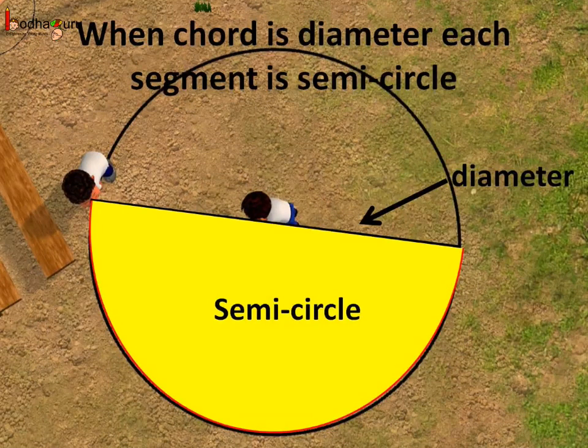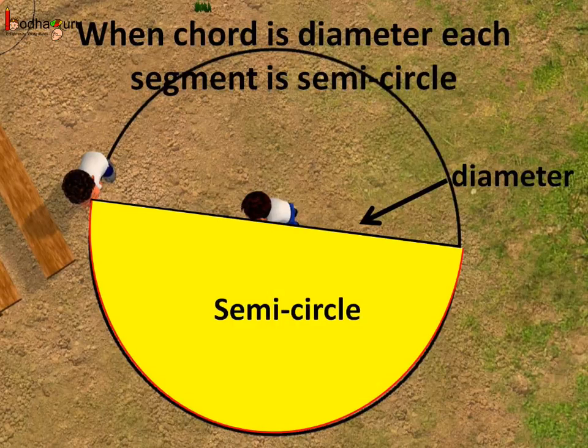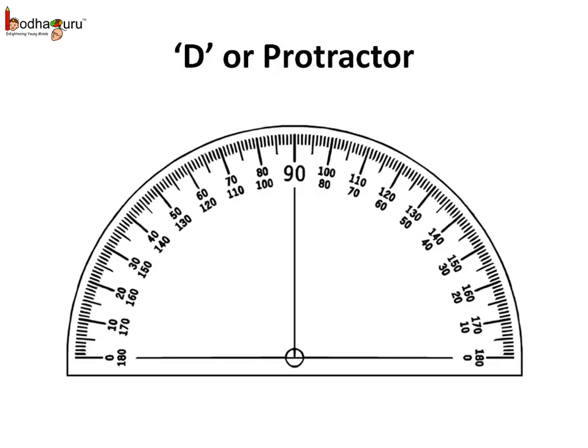We can also say when the chord is the diameter both the segments are equal and each segment or the part is called semi-circle. If you remember the D or the protractor which we use to measure angle is also a semi-circle.